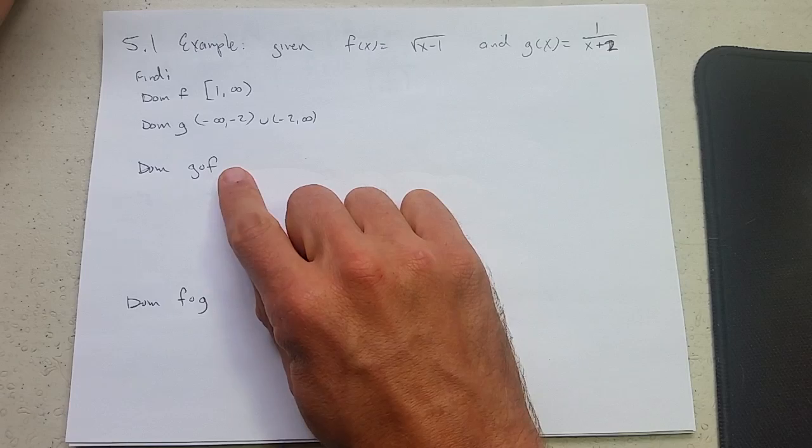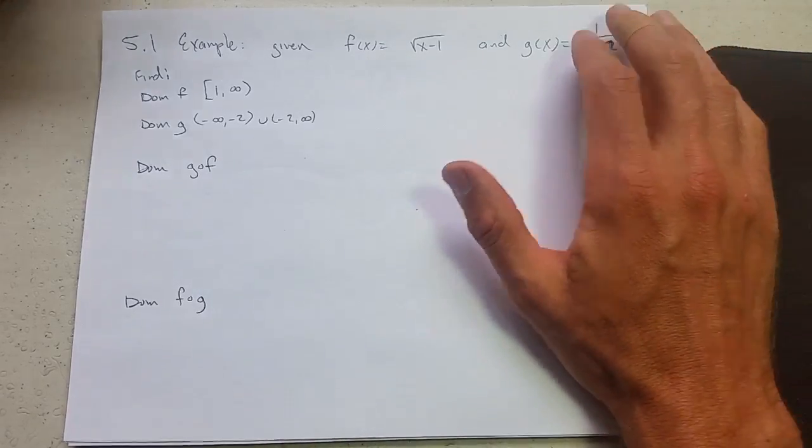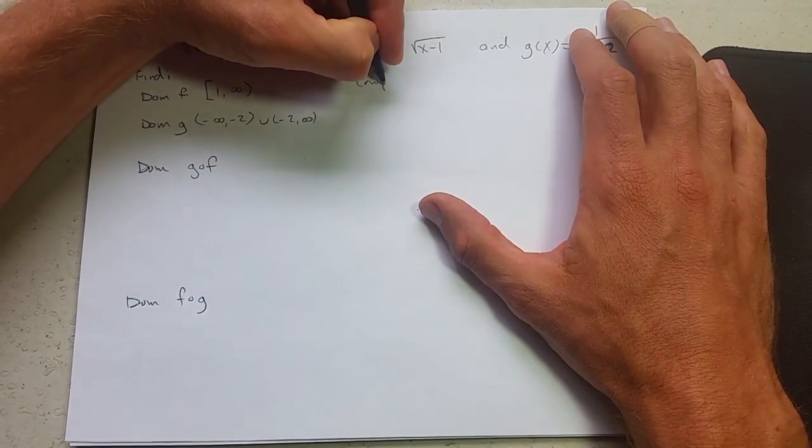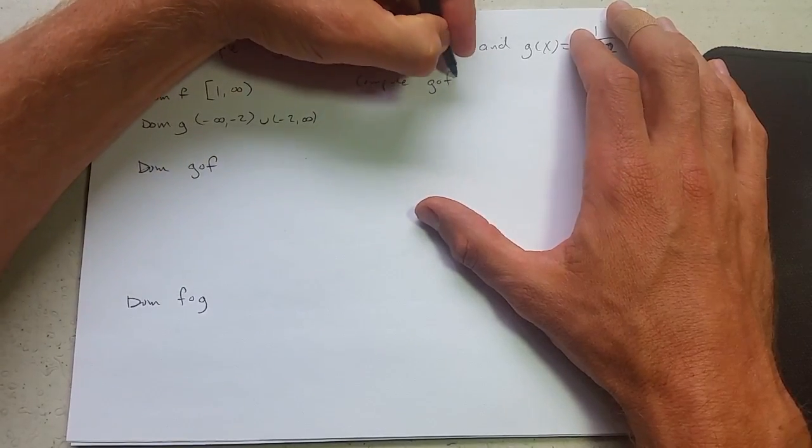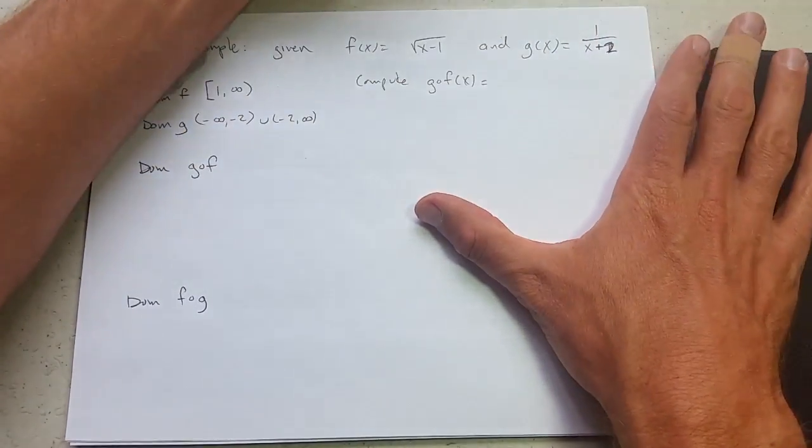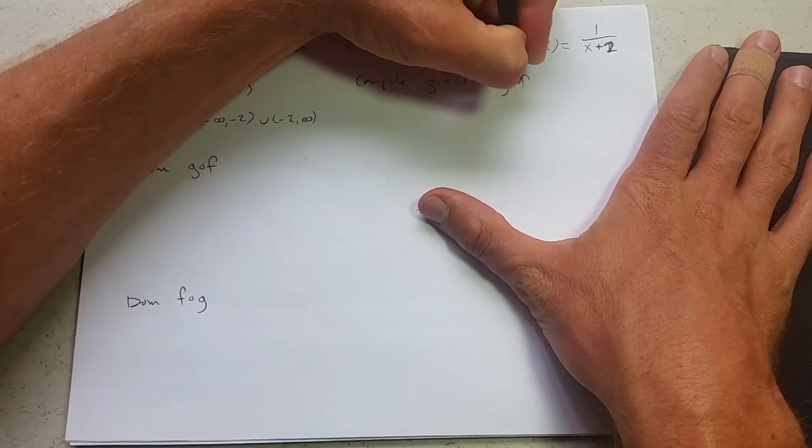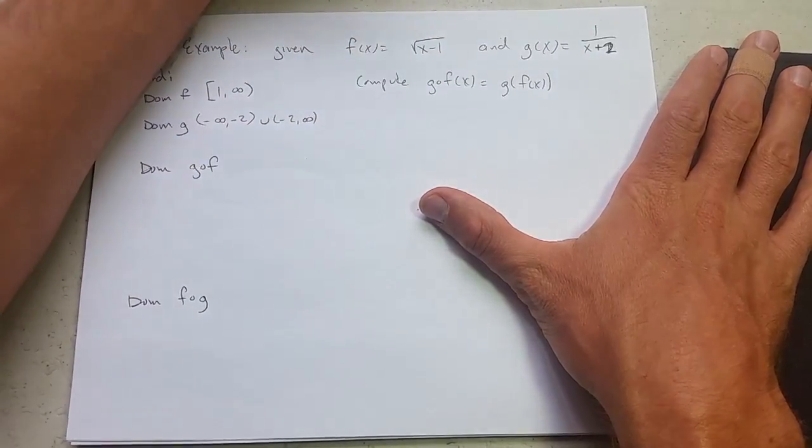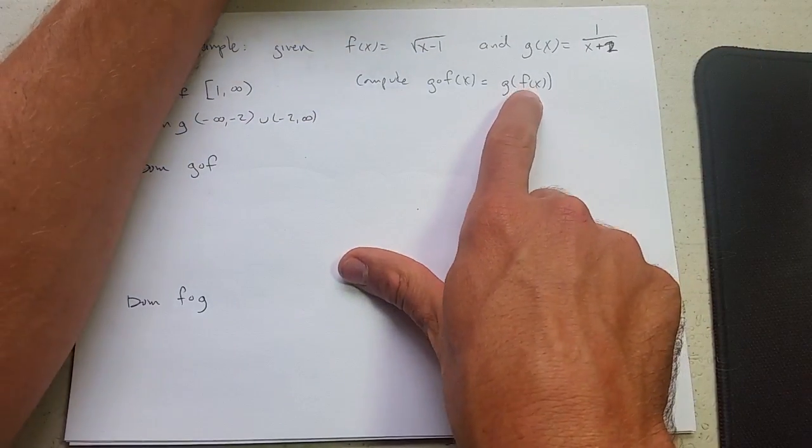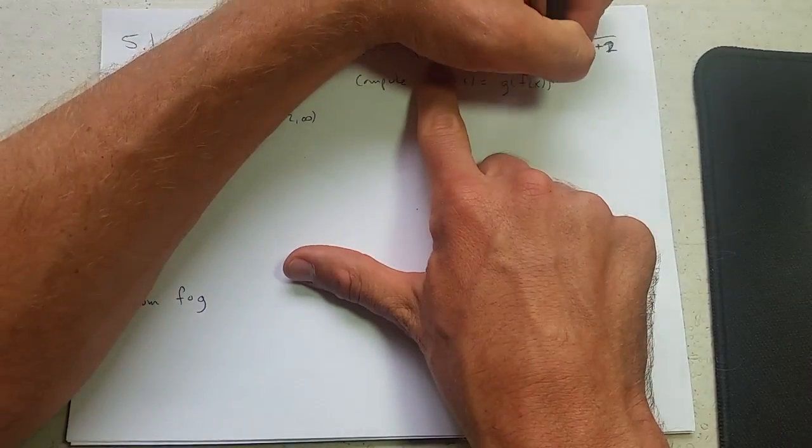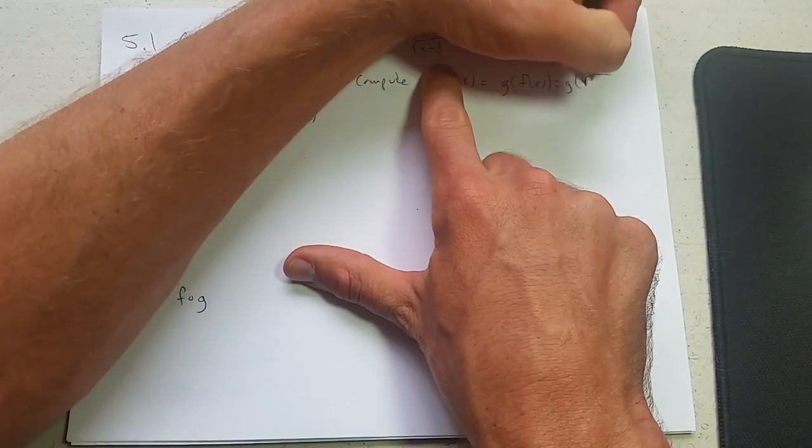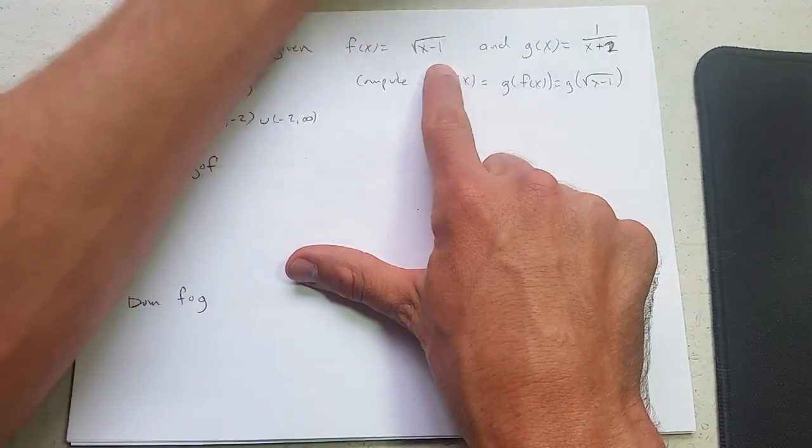Now we're going to look at domain of g of f. Let's also compute g of f of x. I really recommend that you use this notation. So first we're going to take the inside part. What's f of x? It's the square root. So this is g of square root x minus 1.